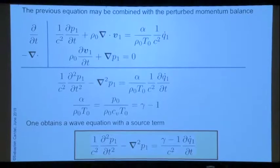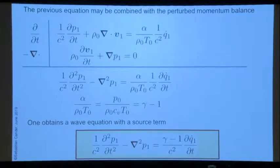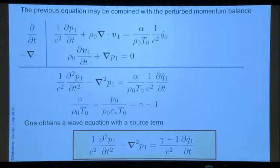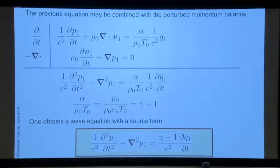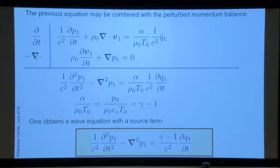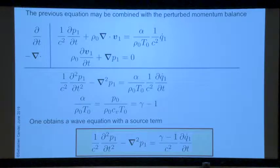We have the mass equation and the equation for momentum, and we can combine them to obtain a wave equation. But now we have on this side a source term. This equation — which governs the pressure field in a medium where you have heat release fluctuations — is so beautiful that I put it in red and yellow. Unfortunately, in your notes everything is in black and white. This is the basic equation in reactive flows: heat release fluctuations will produce pressure.